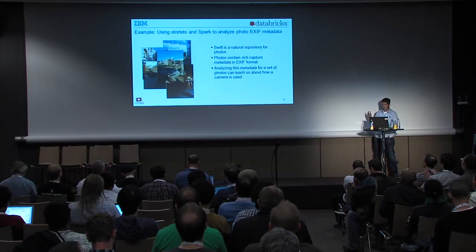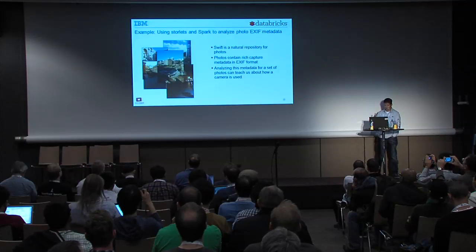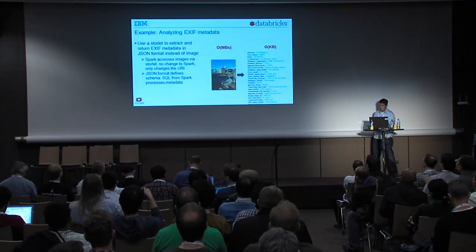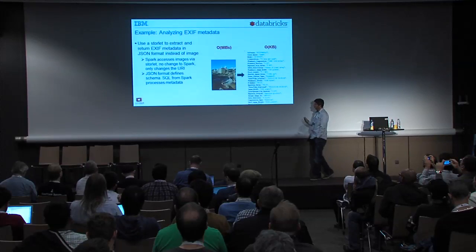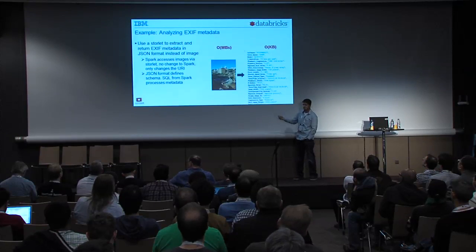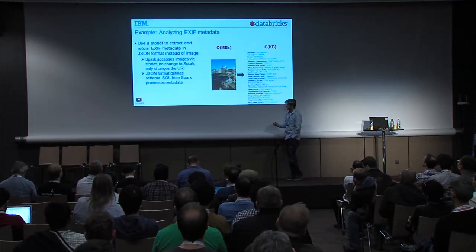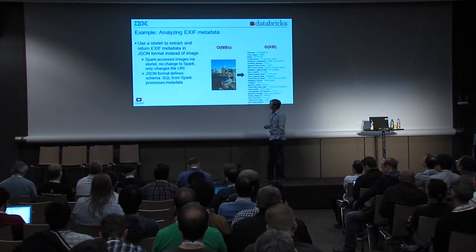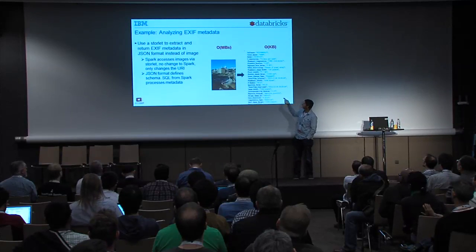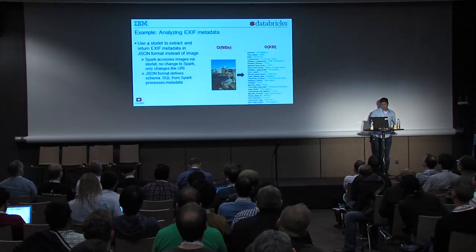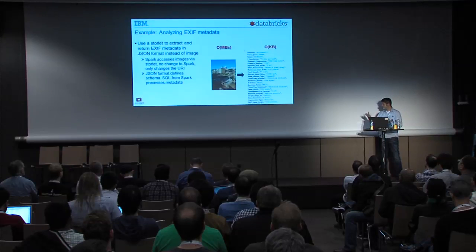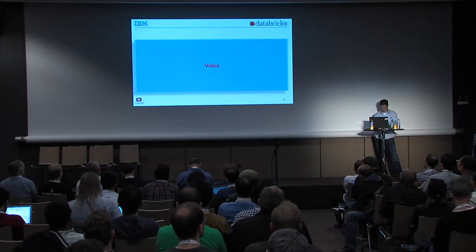An example is EXIF metadata extraction. A particular image may be about 10 megabytes in size, while the EXIF metadata is about one kilobyte. Using an open-source package from Apache Commons, you can write a very simple Java application — just a few lines of code — that extracts the EXIF metadata from an image. That storelet returns the metadata as a response, enabling much less data to be transferred over the network to Spark.